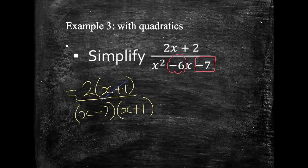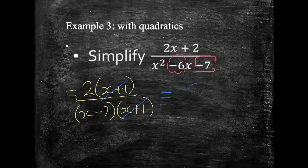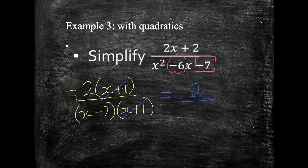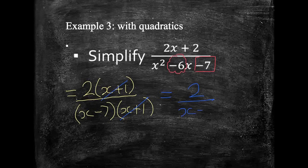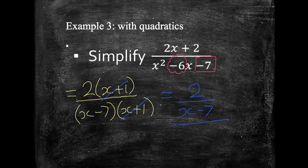We've got an x plus 1 at the bottom and an x plus 1 at the top. So, we can simply cross those out, like we were looking at before, and see what we're ending up with. In this case, I've ended up with 2 lots of, sorry, 2 over x minus 7. So, it's simplified down to this.